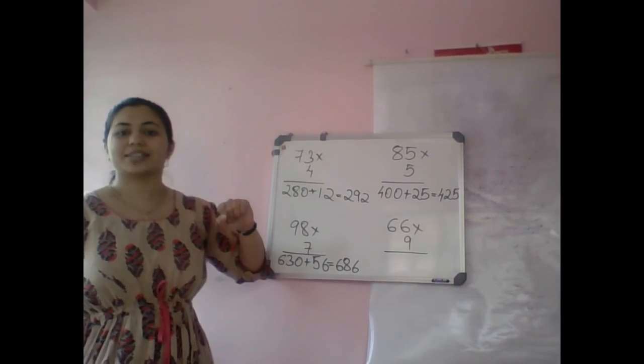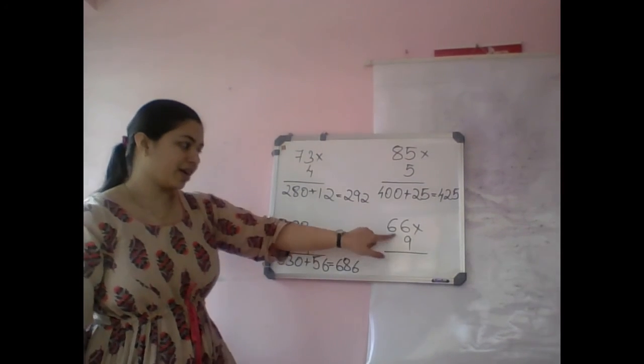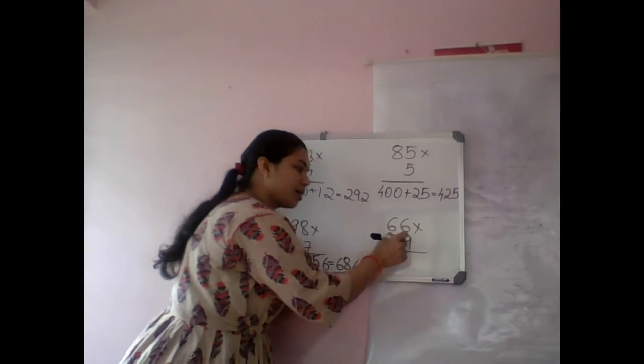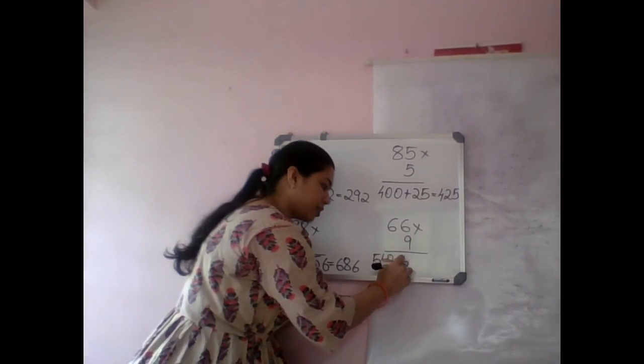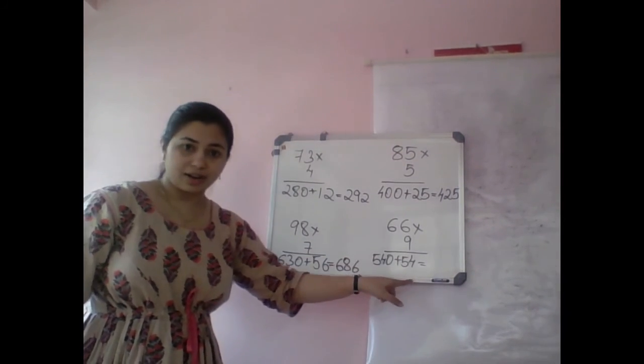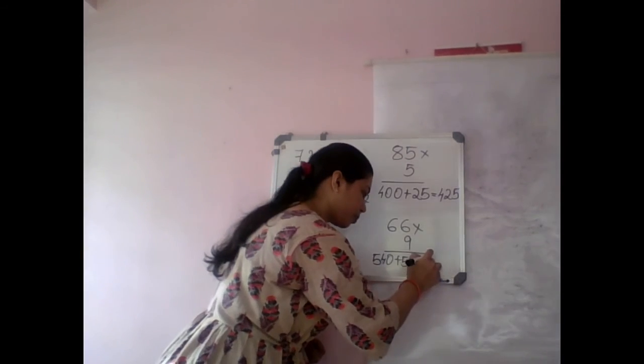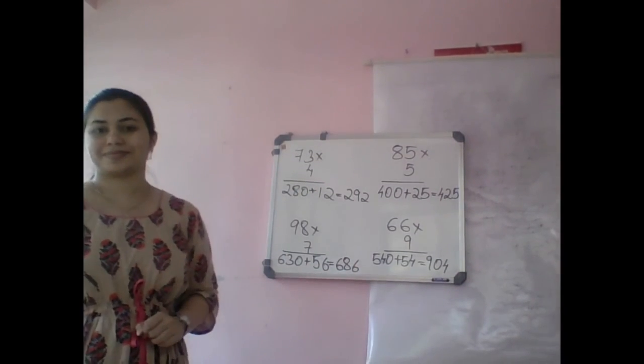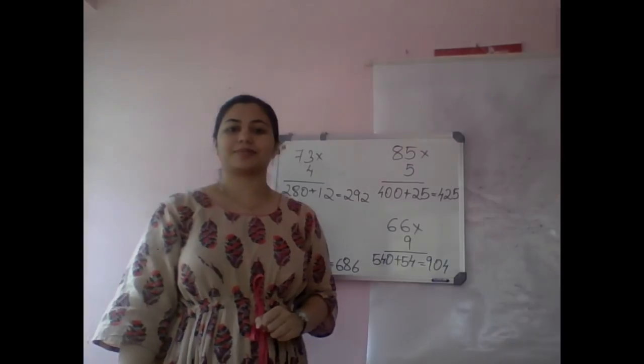Last one: 66 times 9. 9 into 60, 540, plus 9 times 6, 54. Adding 500, 540, 590, 594. I hope this is clear.